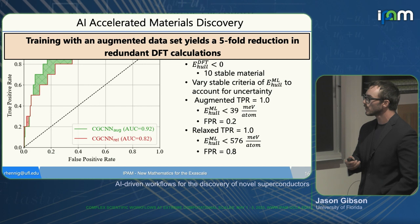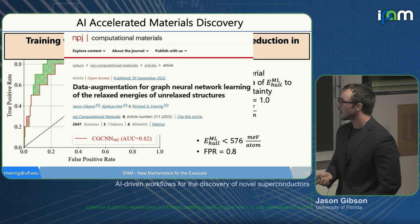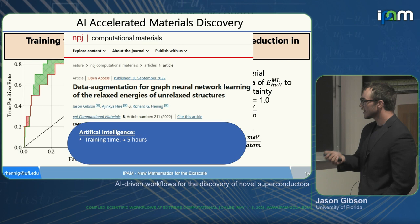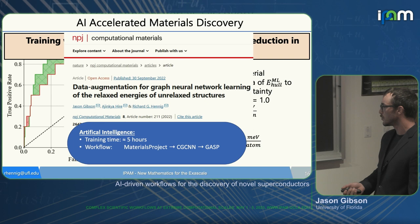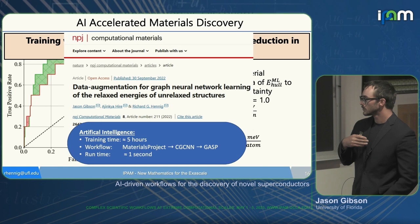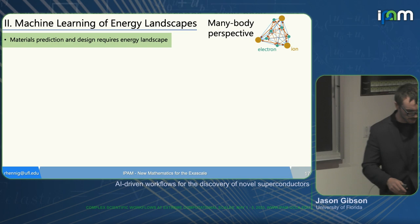We published this in npj Computational Materials — you can read more about it there. The AI training took about five hours, and we can implement this through GASP to make stability criteria predictions in about a second per structure. With that, I'll pass it back to Richard.